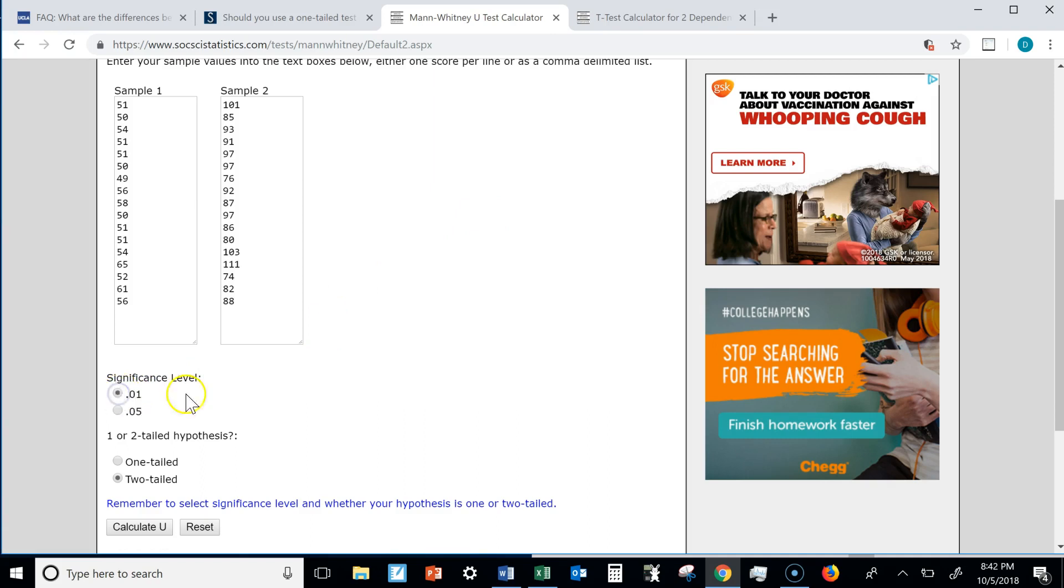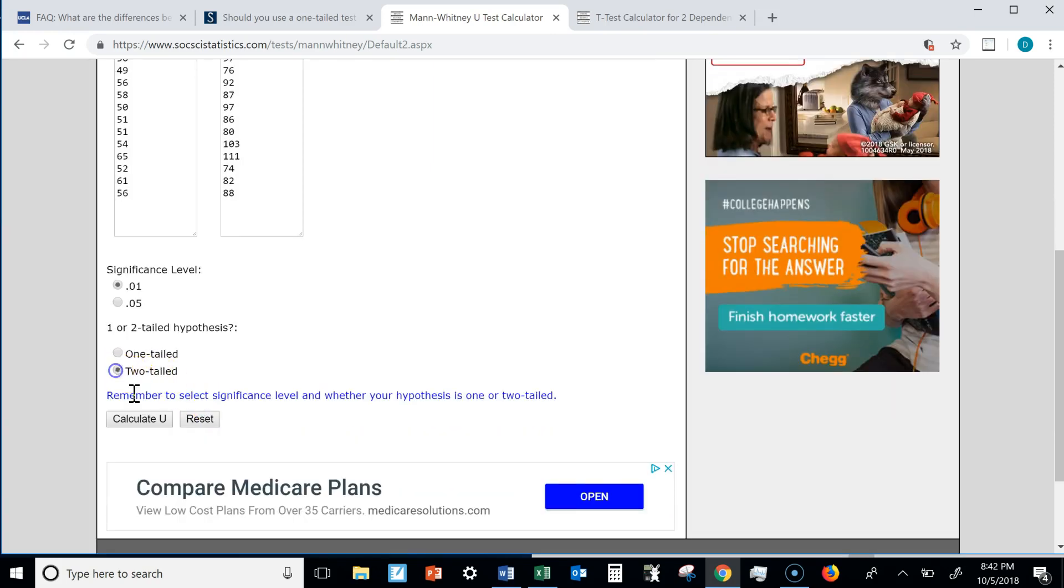I am going to hold myself to a higher standard. I'll make my p-value, my significance level, 0.01. So if I get a p-value of 0.02, I can't reject the null. I'll be conservative, I'll choose two-tailed, this is what we usually do, and I click calculate.